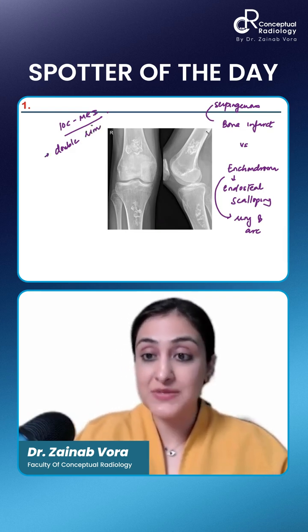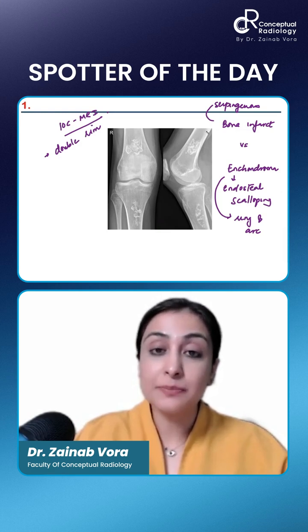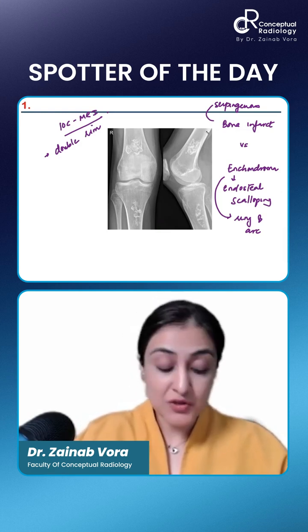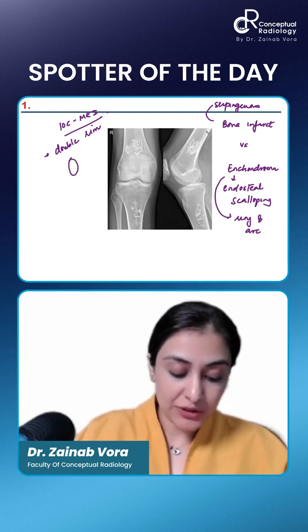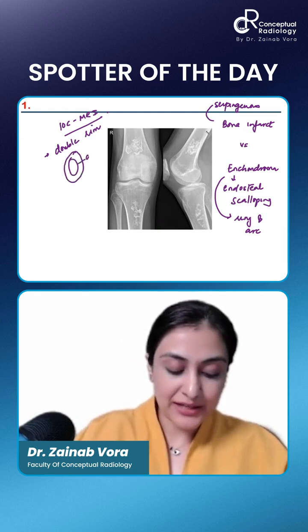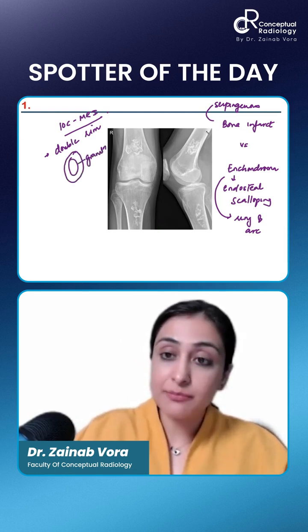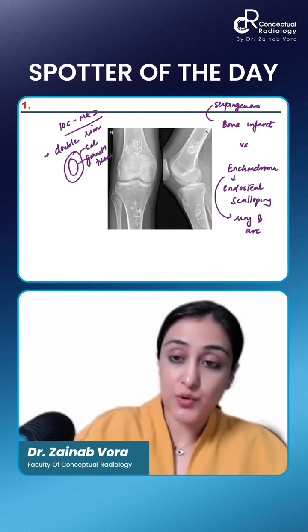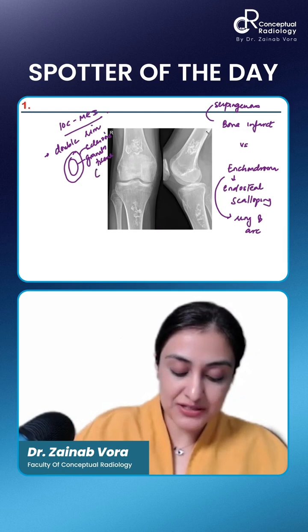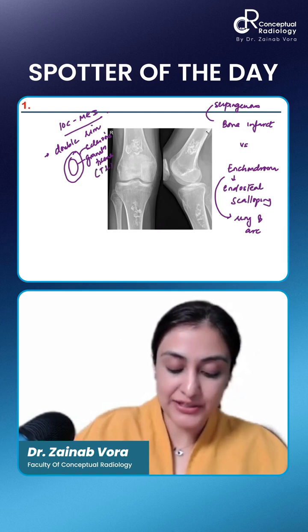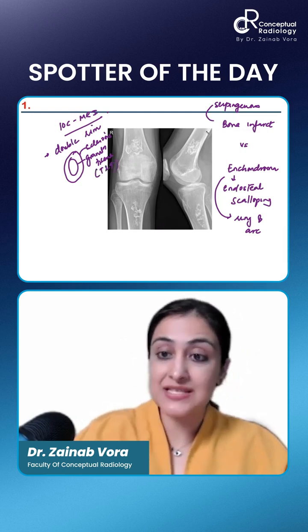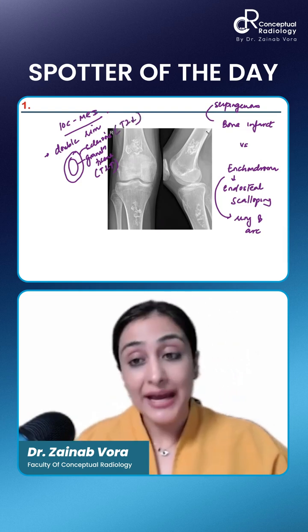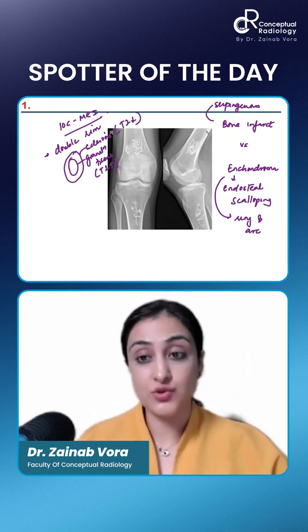There is a double rim sign. What is the inner part — is it hypo-intense or hyper-intense? There are going to be two rims: one is the granulation tissue and the other is the dead bone, which is the osteosclerosis. The inner part, which is granulation tissue, is going to be T2 hyper-intense, whereas the outer part, because it's bony sclerosis, is going to be T2 hypo-intense.